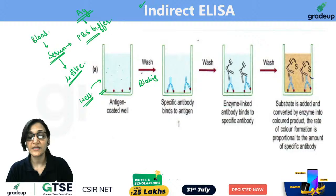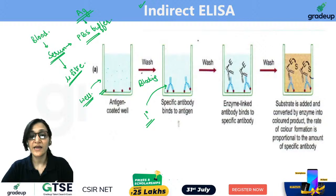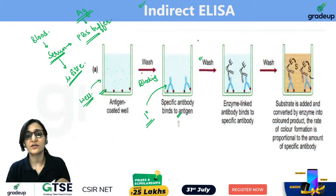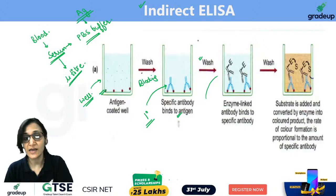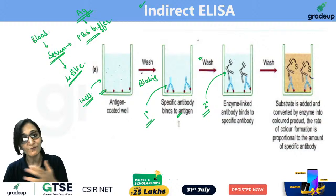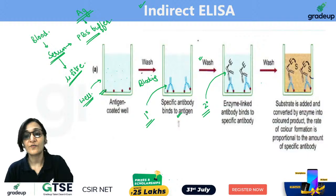Notice that in this antibody addition, there is no enzyme. This means this is the primary antibody. In Indirect ELISA, two antibodies are used. This is the primary antibody, which is specific for the antigen. After adding primary antibody, washing is done again to remove any non-specifically bound primary antibody. Then the enzyme-linked secondary antibody is added.